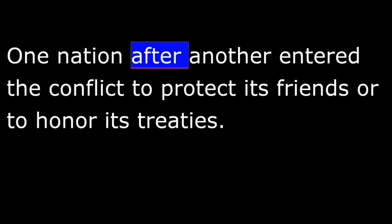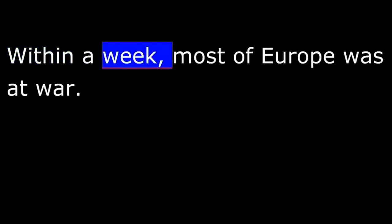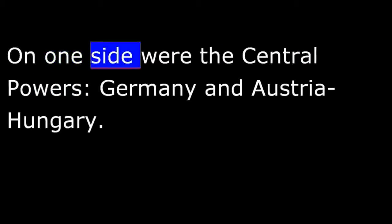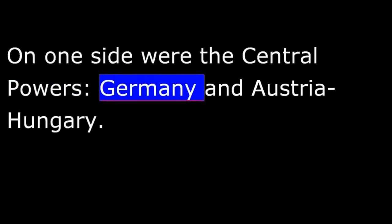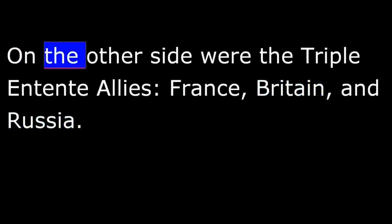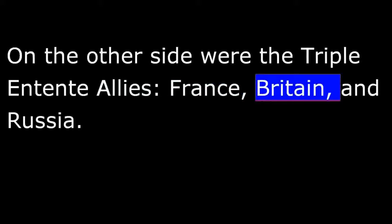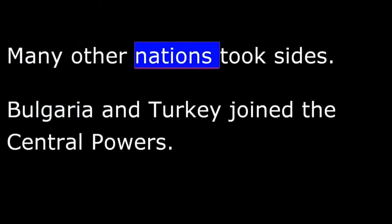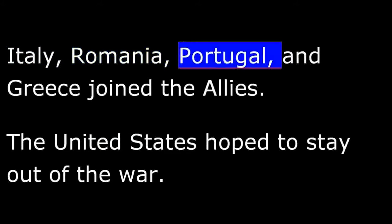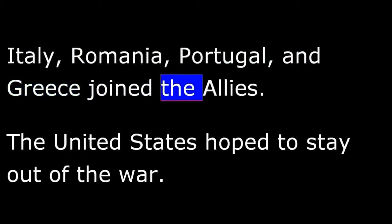One nation after another entered the conflict to protect its friends or to honor its treaties. Within a week, most of Europe was at war. On one side were the Central Powers, Germany and Austria-Hungary. On the other side were the Triple Entente Allies — France, Britain, and Russia. Bulgaria and Turkey joined the Central Powers; Italy, Romania, Portugal, and Greece joined the Allies.